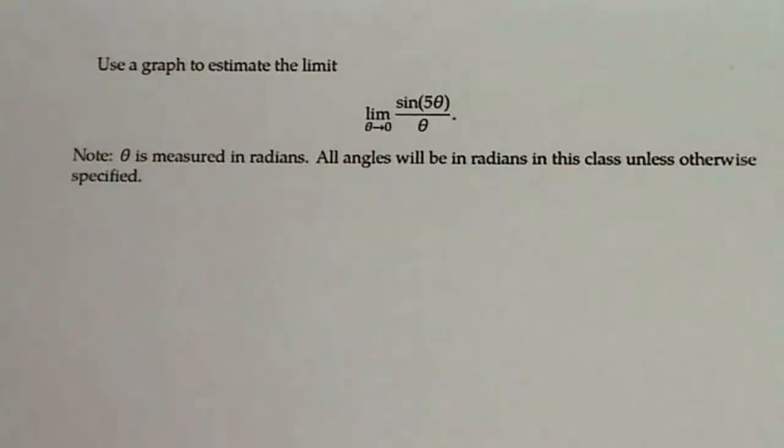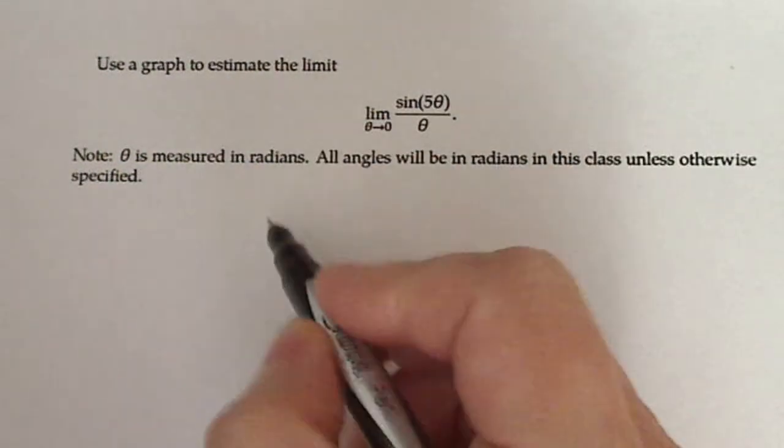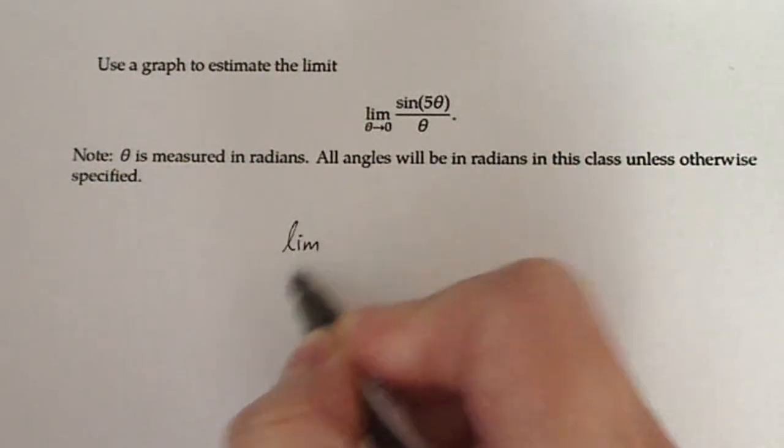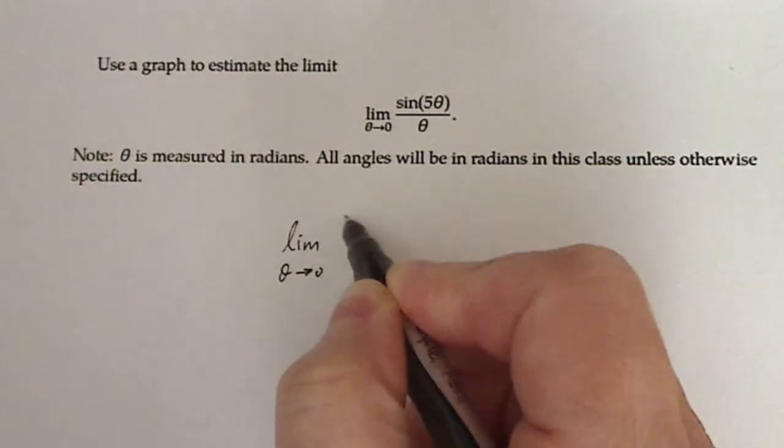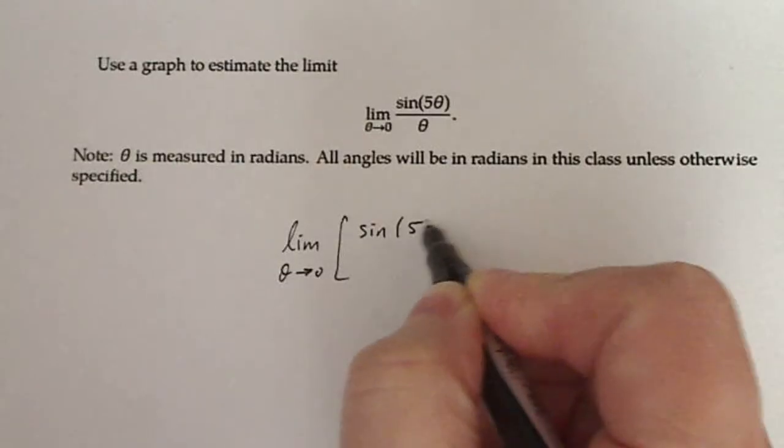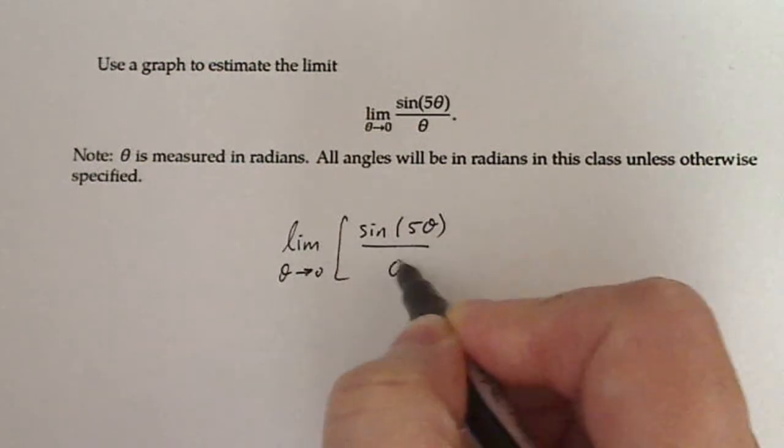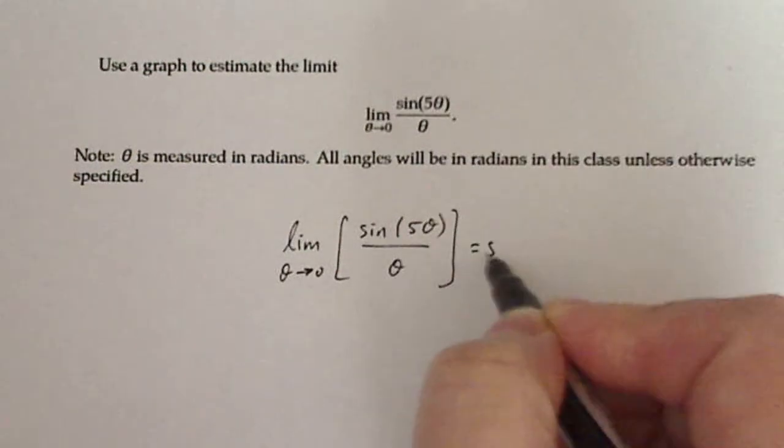But in the end, then we're going to write the limit as theta goes to zero of the function sine of five theta over theta is equal to five.